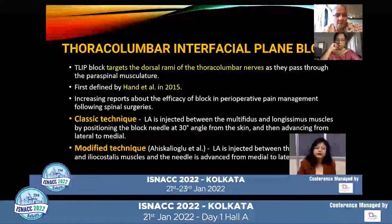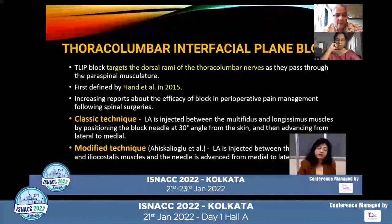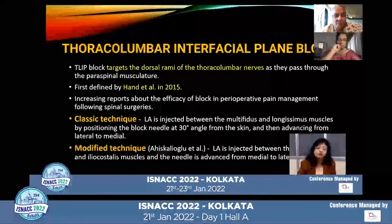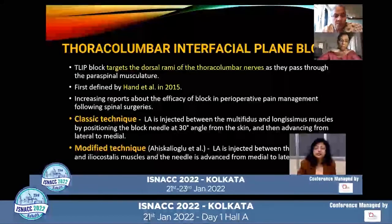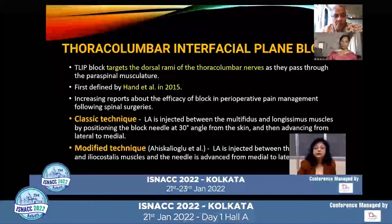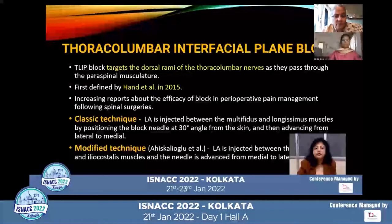It can be administered by classic technique or the modified technique. In the classic technique, local anesthetic is injected between the multifidus and the longissimus muscle by positioning the block needle at a 30-degree angle from the skin and then advancing from lateral to medial side. In the modified technique, the local anesthetic is injected between the longissimus muscle and the iliocostalis muscle, and the needle is advanced from medial to lateral side.